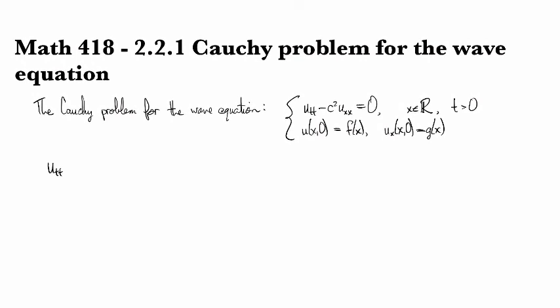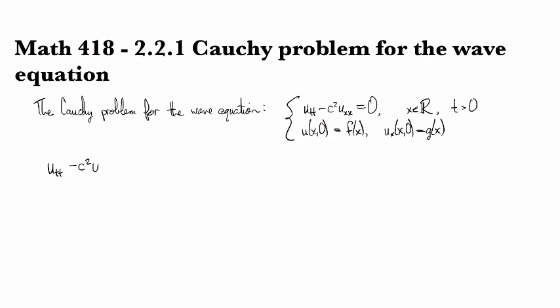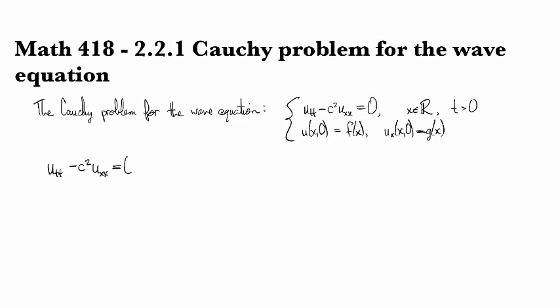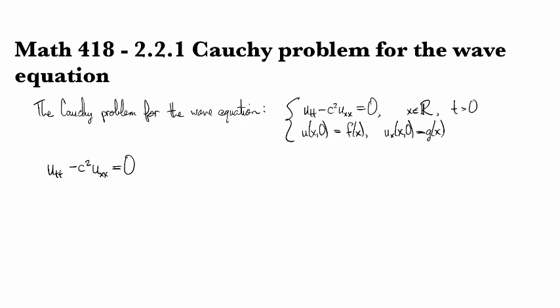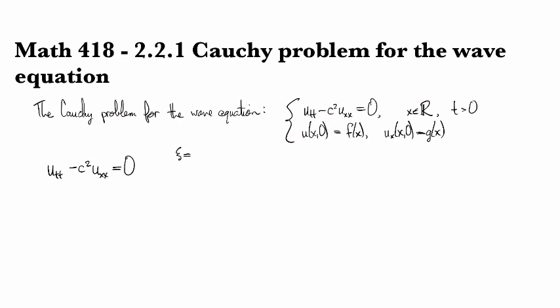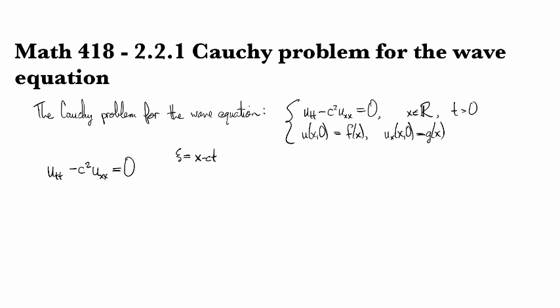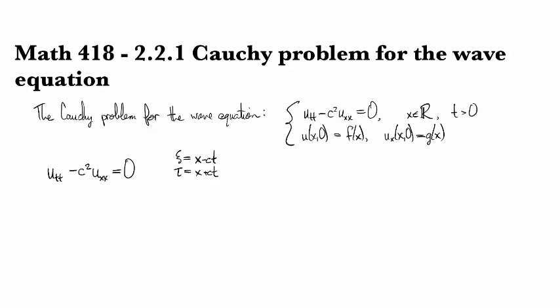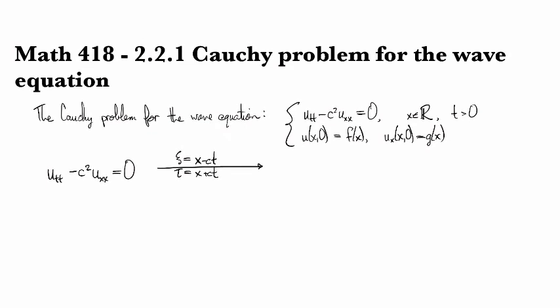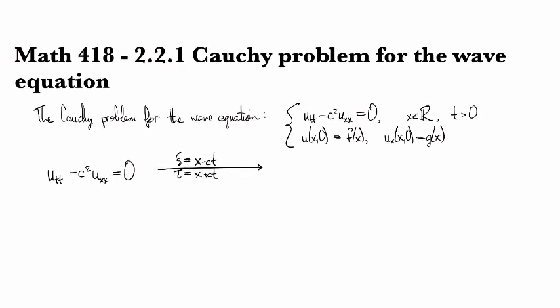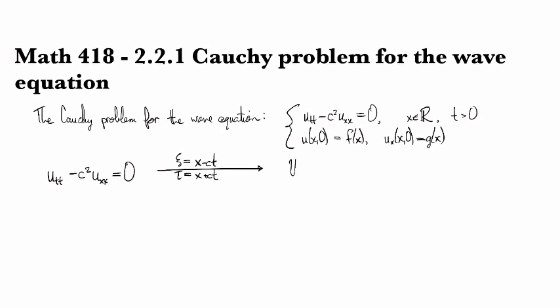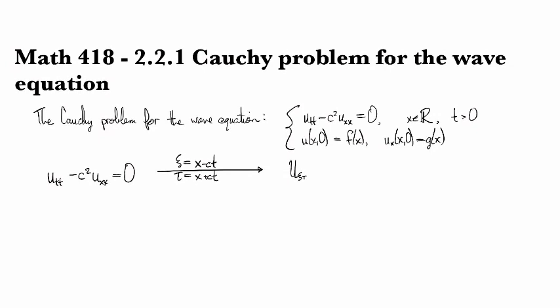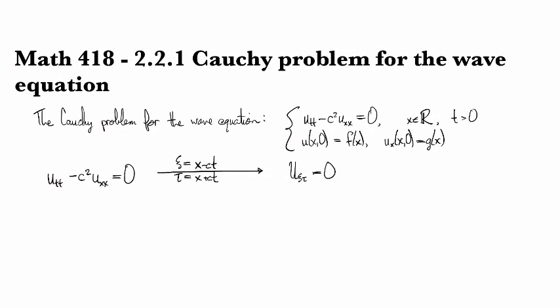So u_tt minus c squared u_xx equals zero. We've seen by using the characteristic coordinates ξ = x - ct and τ = x + ct, this can be converted into its more simple form: u_ξτ = 0.